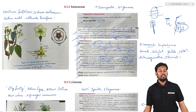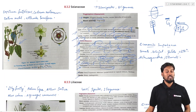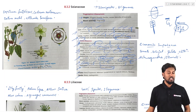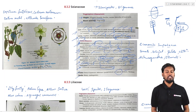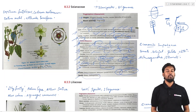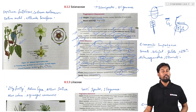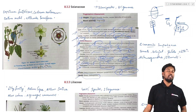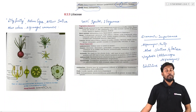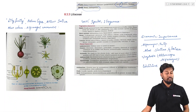The fruits of Solanaceae are generally berries, as in Solanum and Capsicum. In Datura and Nicotiana, the fruits are capsules. The seeds are many in number and endospermic in the Solanaceae family.